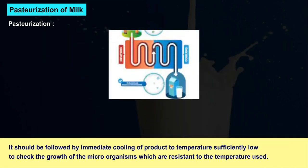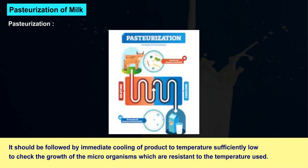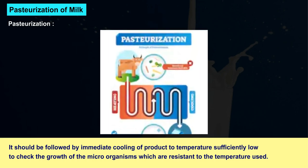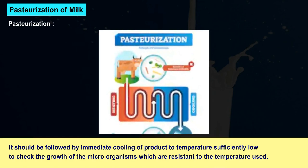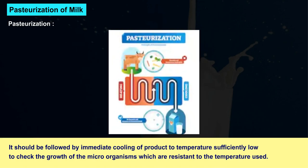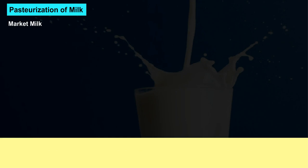It should be followed by immediate cooling of the product to a temperature sufficiently low to check the growth of the microorganisms which are resistant to the temperature used. Market milk is divided into two types.